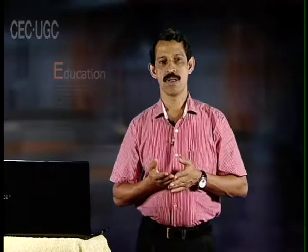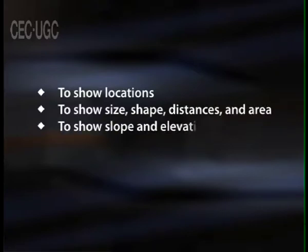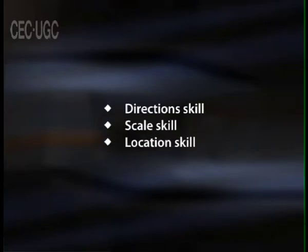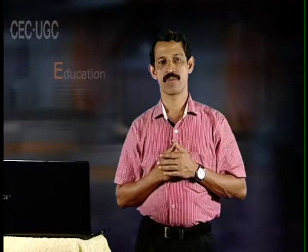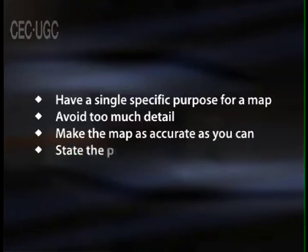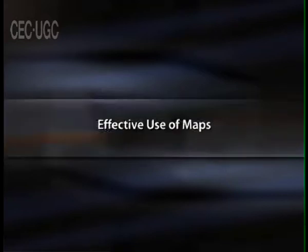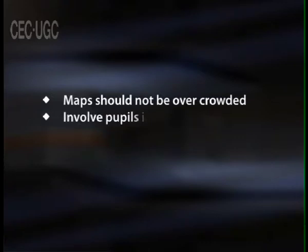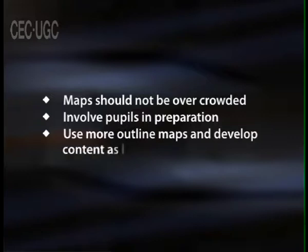The purposes of using maps include: to show locations, to show size, shape, distances and area, to show slope and elevation, to give a picture of places and to illustrate the effects of events. Map reading skills mainly include direction skill, scale skill and location skill. Guidelines for map making: have a single specific purpose, avoid too much detail, make the map as accurate as you can and state the purpose clearly in the title. Maps can be used effectively in social studies class by ensuring maps are not overcrowded, involving students in preparation and using more outline maps while developing content as the lesson proceeds.